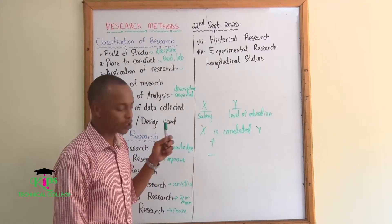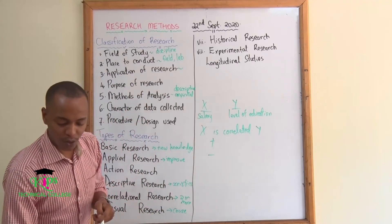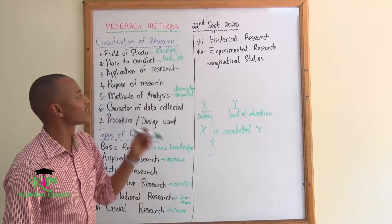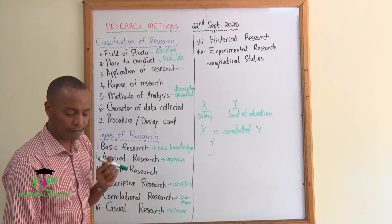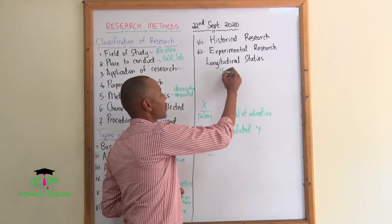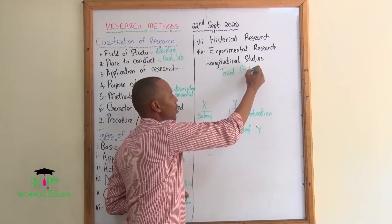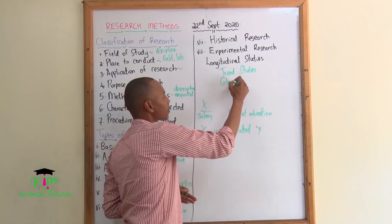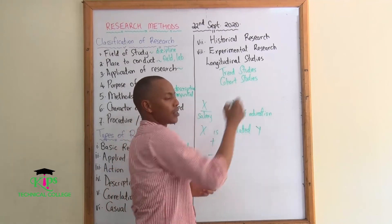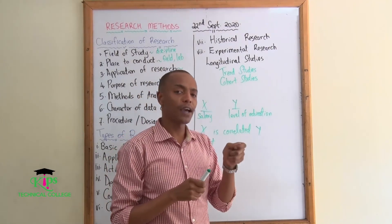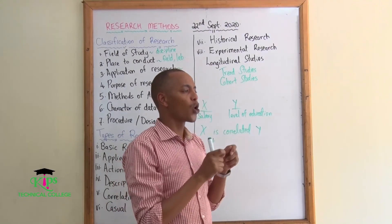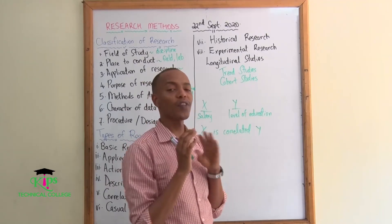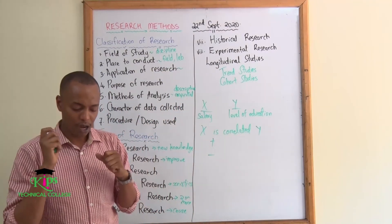Finally, we have longitudinal studies. Longitudinal studies may be listed as a type of research, and we have different types. There are trend studies, which try to look at what usually happens over a certain period of time. Then there are cohort studies, which pinpoint a specific group — for example, people born from 1985 to 1995 — to find what they have in common.